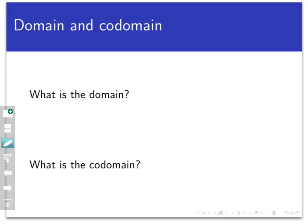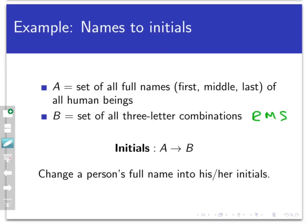So now that it's a function, we can start talking about things like its domain and codomain. Well, the domain of this function is definitely A, the set of all first, middle, last names of people. And the codomain is just the set B, the set of all three letter combinations. So we don't have to think too hard about domain and codomain here. In fact, if we page back and just look at the way that the process was set up, the domain and the codomain are essentially given to us in the definition of the process.